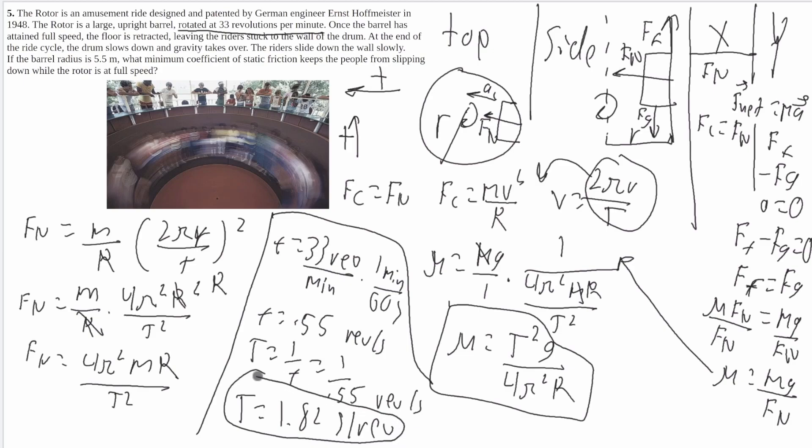So now, when you plug this t in here, make sure to square it. G is going to be 9.8, 4 pi is just a constant and r is going to be 5.5. So now you have everything you need to solve and you can get the right answer. Thank you.